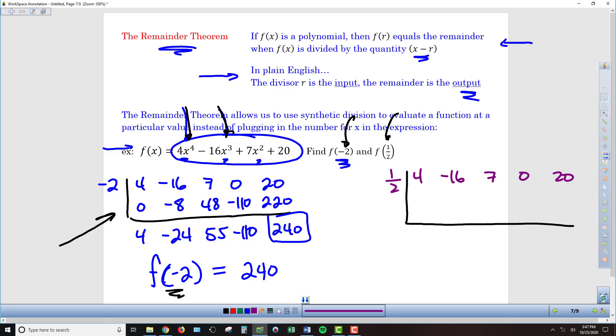Now we can roll through it by bringing the 4 down, multiply on the diagonal, so half of 4 is 2. Negative 16 and 2 is going to be negative 14. Half of negative 14 is negative 7. Add in the vertical direction, we get negative 7 plus 7 is 0. Half of 0 is 0, 0 plus 0 is 0, half of 0 is 0, and then 20 plus 0 is 20.